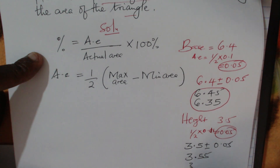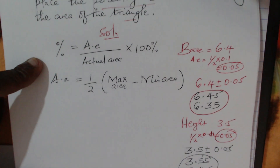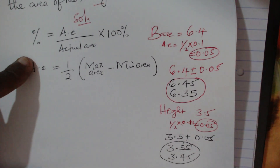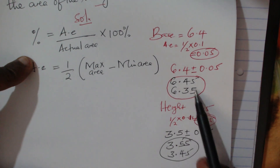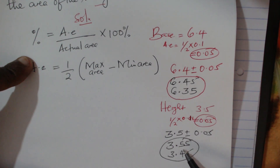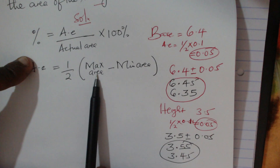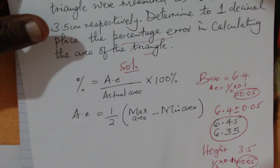And 3.45 when you subtract 0.05. These are the limits for the base and the limits for the height. They are very useful because these are the values you will use in calculating the maximum area and minimum area.